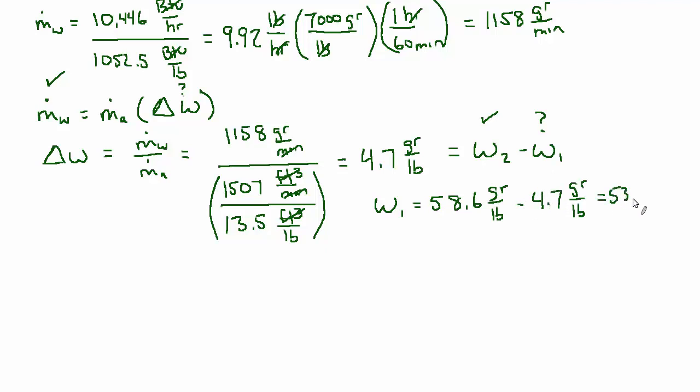So what are we saying? We're saying that the entering air has this humidity ratio, 53.9, then it acquires an additional 4.7 in the space, which is resulting from the latent load, and then it ends up at 58.6 as the leaving condition. That's omega 2. So if that sounds believable, we now know two things about the entering air.